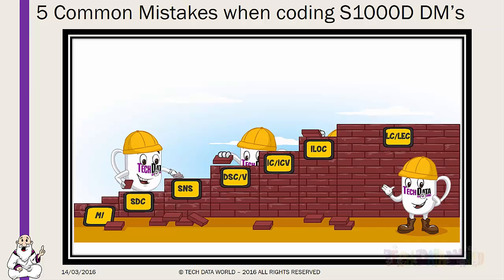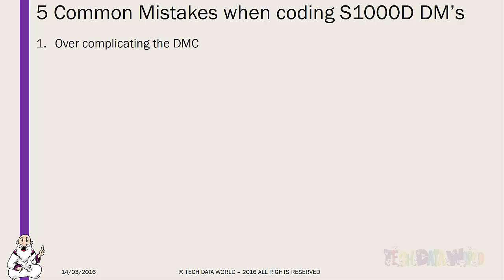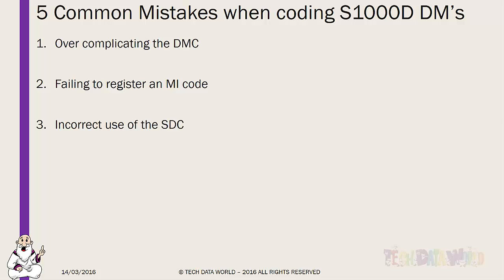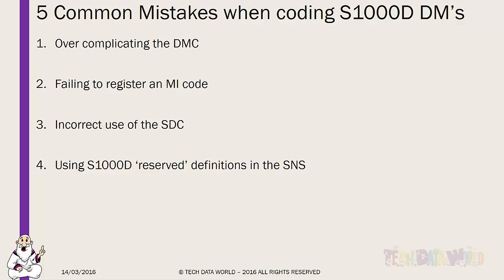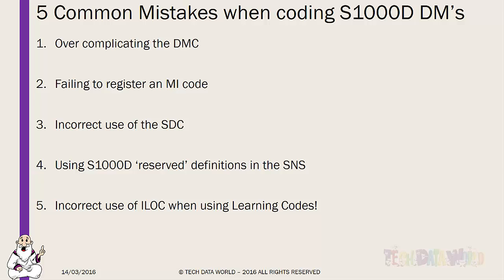So those are our five main points drawn from experience here at TDW. To summarize: over-complicating the DMC; failing to register an MI code; incorrect use of the SDC; using reserved items from the S1000D specification — not just around the SNS but also information codes and other things; and incorrect use of iLock when using learning codes.